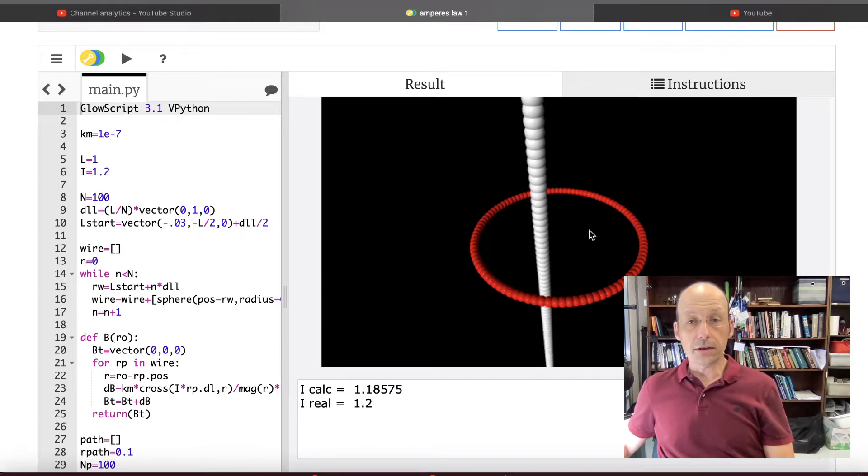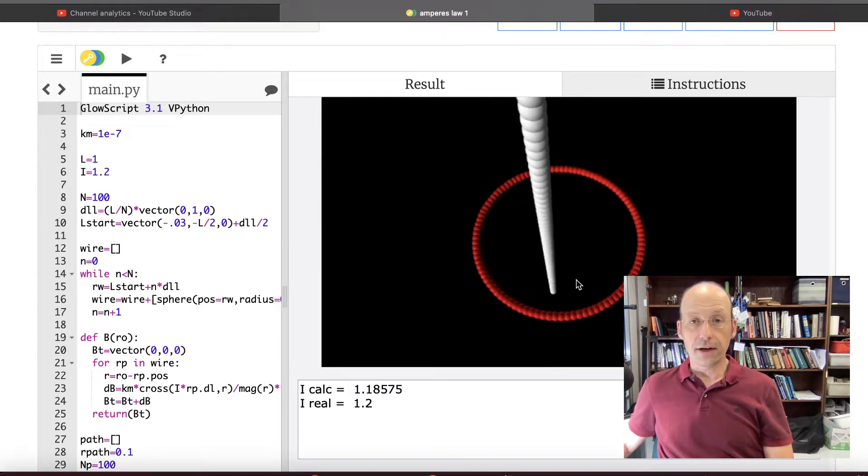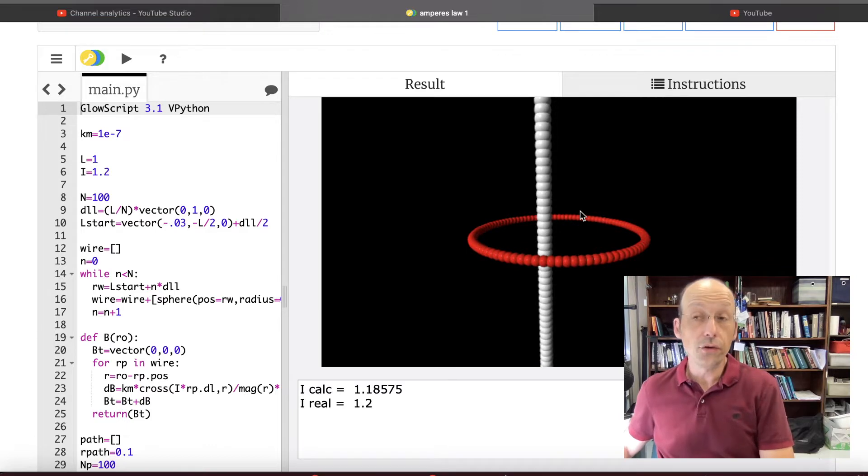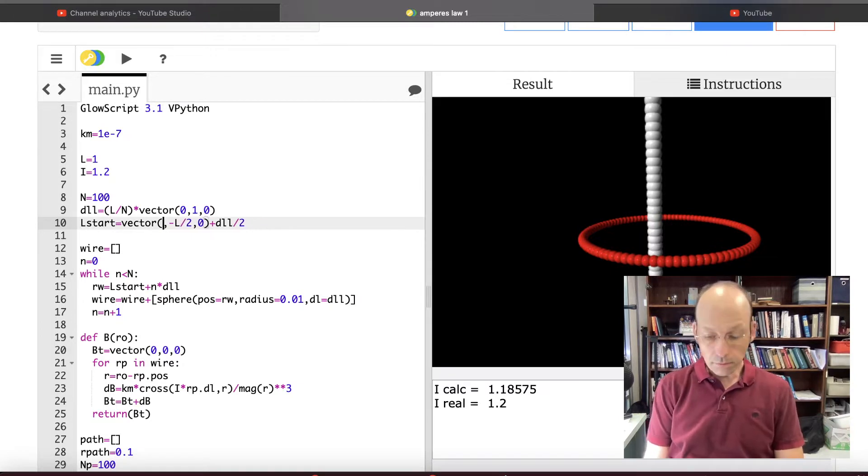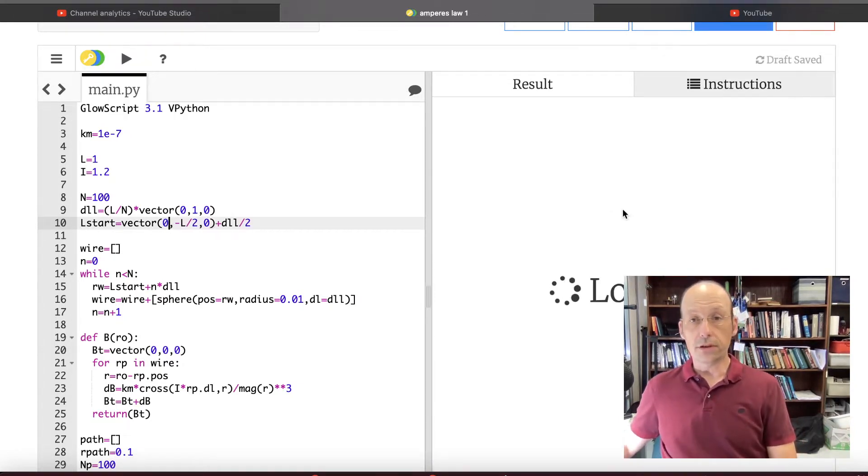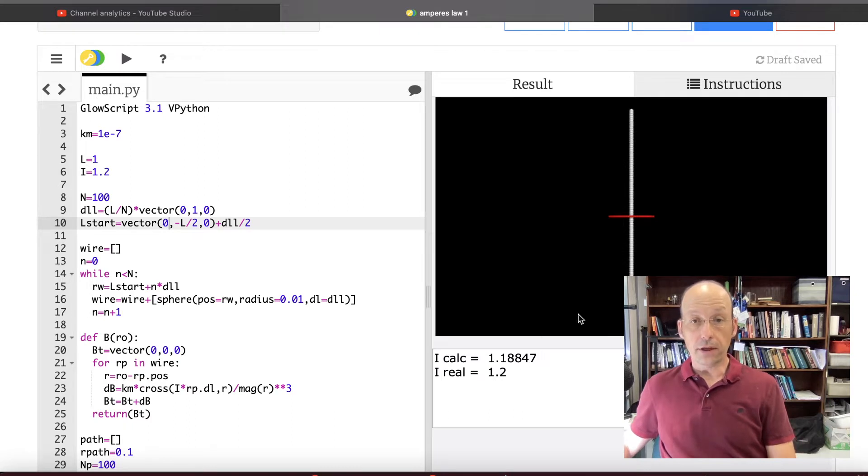But the key thing was, look at right here, this is not centered. It's not in the center. So if you did this as an integral, it would not be an easy integral because the magnetic field direction is not the same as the direction of the ring. And the magnitude is not the same. So I could put it back at the center and then you can see I get essentially the same thing over here. I still get the same thing and now it's at the center. Okay, let's copy this and make a new program.